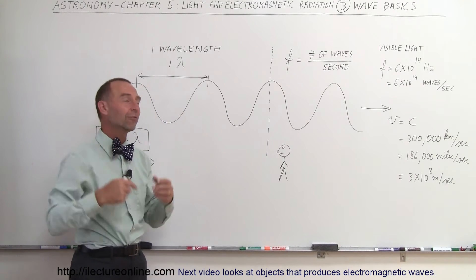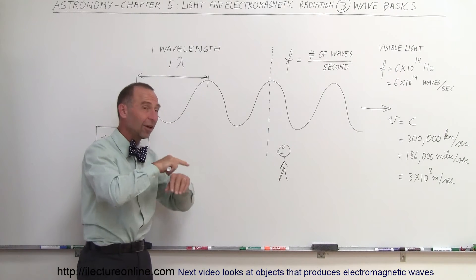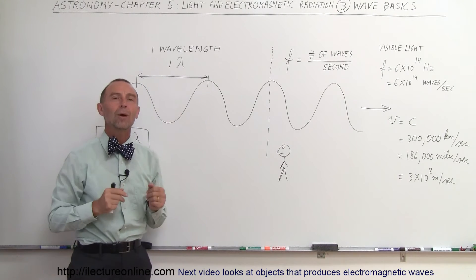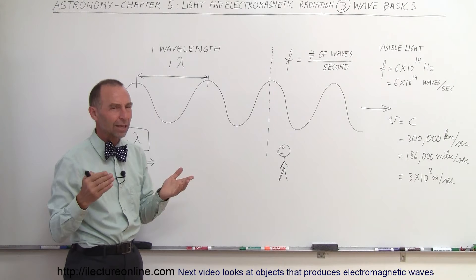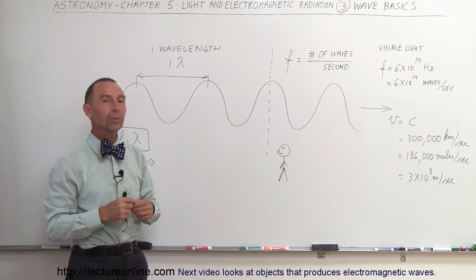But just for the sake of argument, let's say we could count them and the wave passes by and we go 1, 2, 3, 4, 5, 6, a second goes by. That's how many waves travel past us. Another way of looking at it is the number of waves or wavelengths that passes by in a second. That would be the frequency.